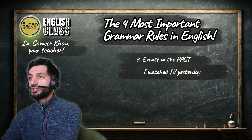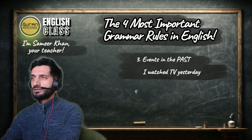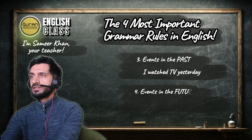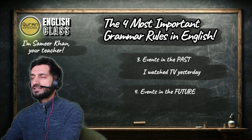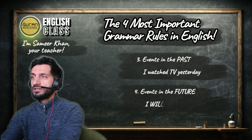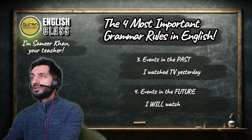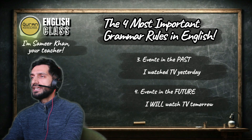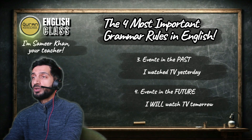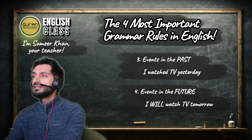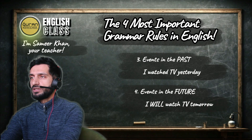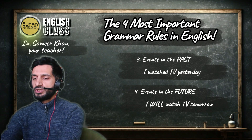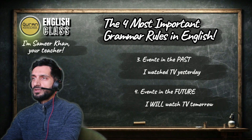Number four — the future. You start with the subject — we always start with the subject for a full sentence in English. I will watch. Here we use the verb without adding -ing or -ed, just the verb on its own: I will watch, I will go, I will read, I will play, I will sleep. Then you can add more information at the end: I will watch TV tomorrow.